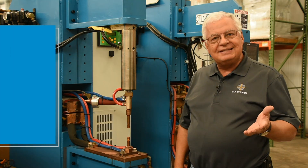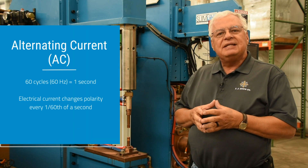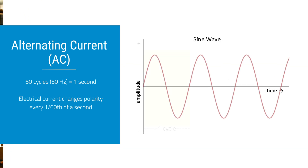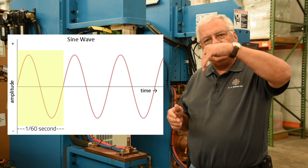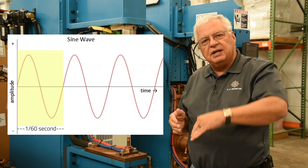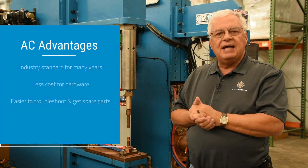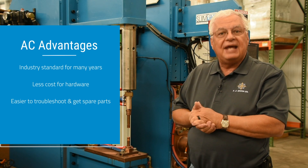Let's start with AC, alternating current. That means in electrical current we change direction or change polarity 60 times a second and it's considered to be 60 Hertz. So we build up current in one direction, it changes polarity, drops down to the other side and so forth. That's 60 times a second — alternating current, AC.